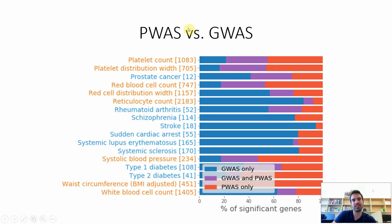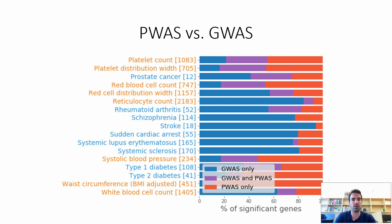We didn't test only a specific gene or phenotype. We considered 50 different prominent phenotypes from the UK Biobank cohort. For each phenotype, you can see the number of significant genes found, and which percentage are significant by GWAS alone (blue), PWAS alone (red), or both (purple). We can see that both GWAS and PWAS add a lot to the overall signal, and they really complement each other very well.